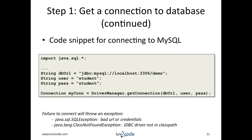Now we have enough background information to get a connection to the database. In this example, we'll define variables for the database URL, the user ID, and the password. Then we'll make a call to DriverManager.getConnection, passing in the three variables. If everything is successful, we will get a valid connection to the database. If there's a failure, it could throw an SQLException if there's a bad URL or credentials, or a ClassNotFoundException if the JDBC driver is not in the class path.